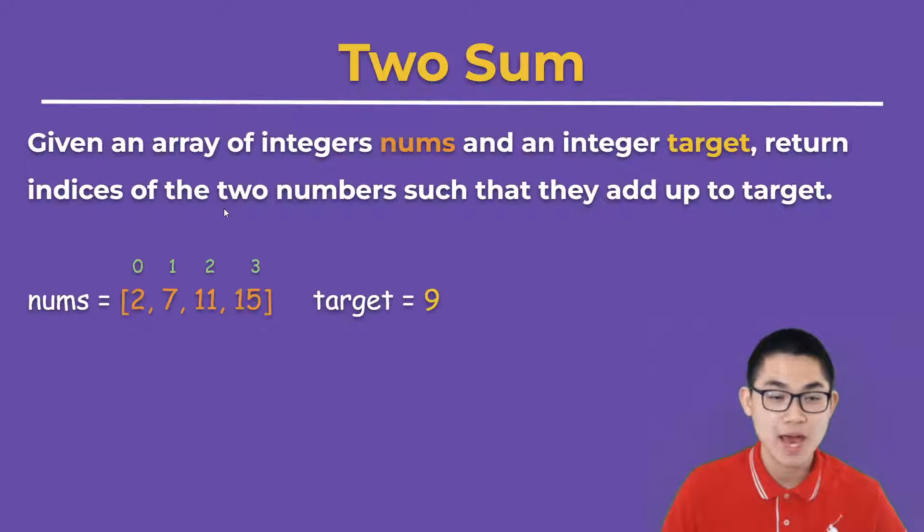So for example, you have the array 2, 7, 11, and 15, and the target is 9. So the solution is 0 and 1. And why is that? Because at indices 0 and 1, you clearly see that 2 plus 7 gives you 9.